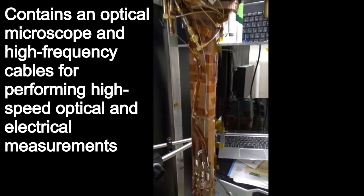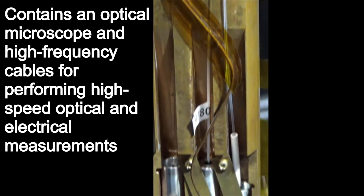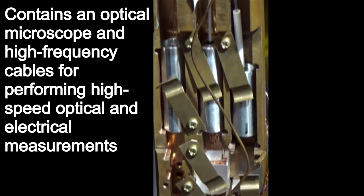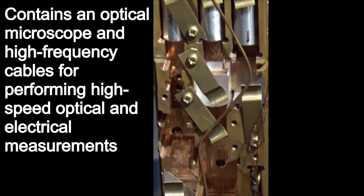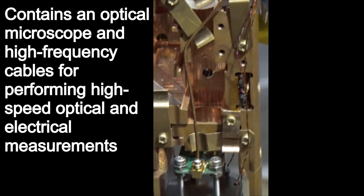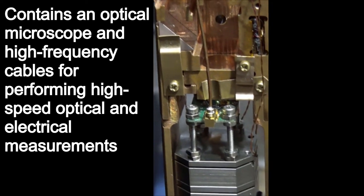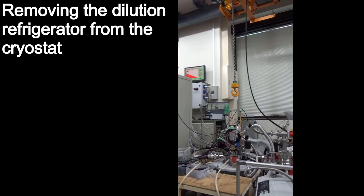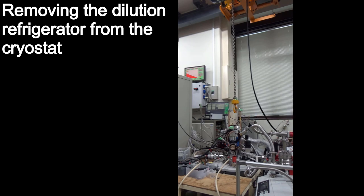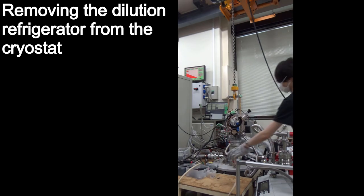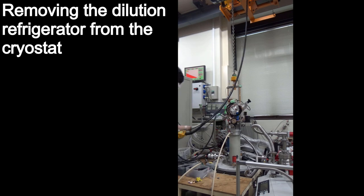Our dilution refrigerator contains high-frequency cables, optical fibers, and a microscope for performing high-speed electrical measurements and optical measurements on the device at low temperature. The dilution refrigerator weighs about 20 kg and must be manipulated with a crane.